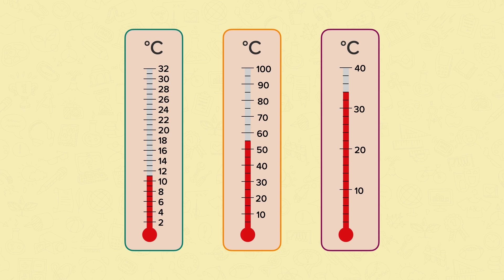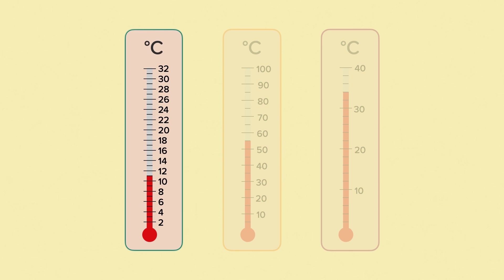Thermometers will have different scales on them depending on what temperatures they're being used to measure. Sometimes some of the numbers will be missing from the scale, so you have to read them very carefully. Let's look at these three thermometers, starting with the first one. The scale on this thermometer goes up to 30 and the numbers go up in twos. The red liquid is between 10 and 12. The number between 10 and 12 is 11, so the temperature shown is 11 degrees Celsius.